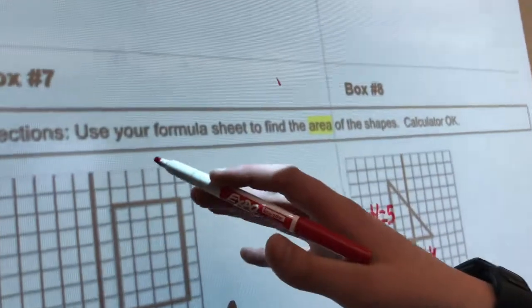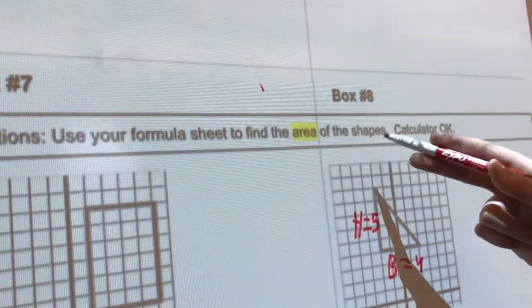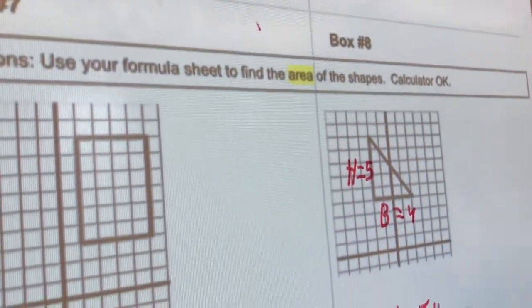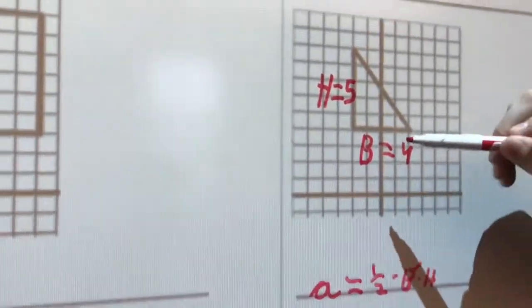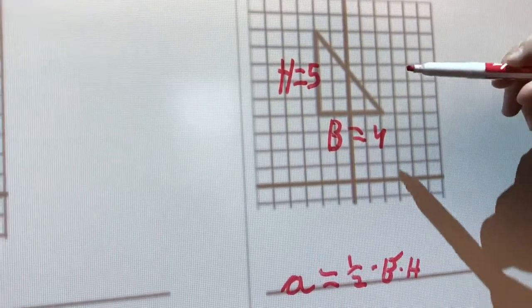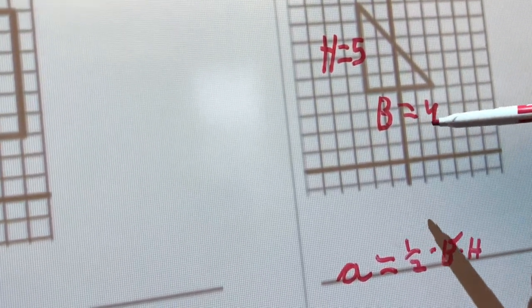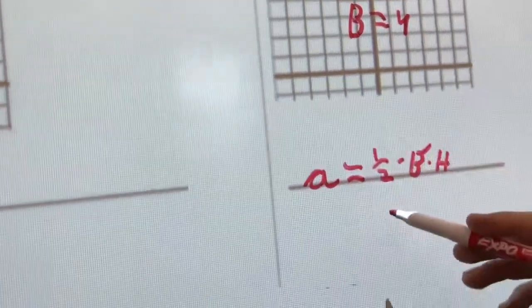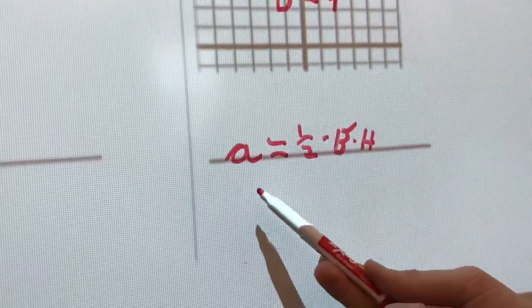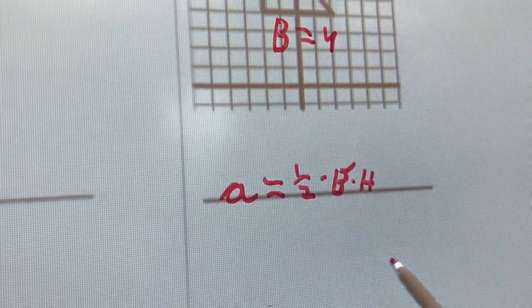All right, so I'm going to start off by reading the directions. Use your formula sheet to find the area of the shapes. Calculator is okay. And so I already found the units, which is the base equals 4 and the height equals 5. And the formula, which I got from the formula sheet, is A equals 1/2 times base times height.